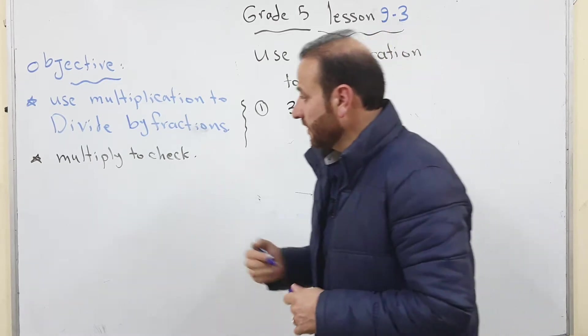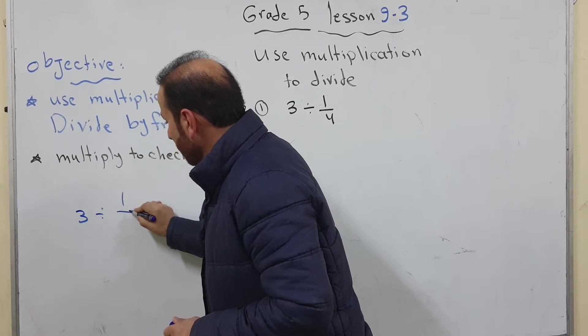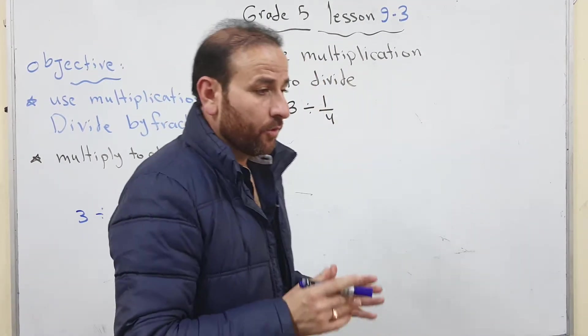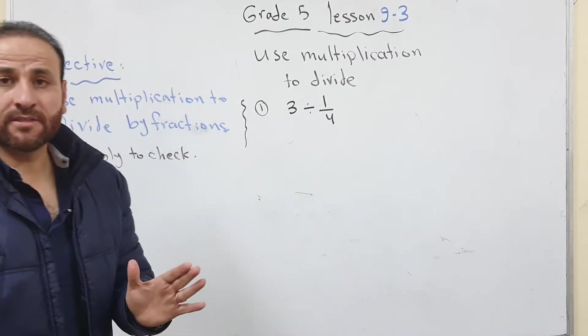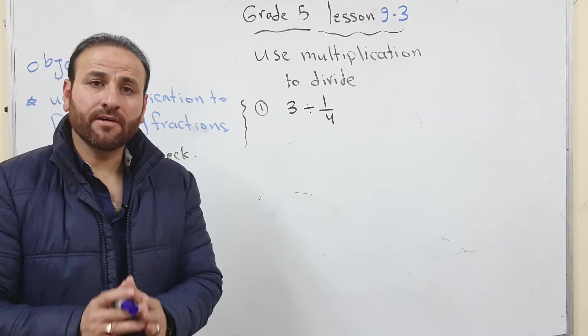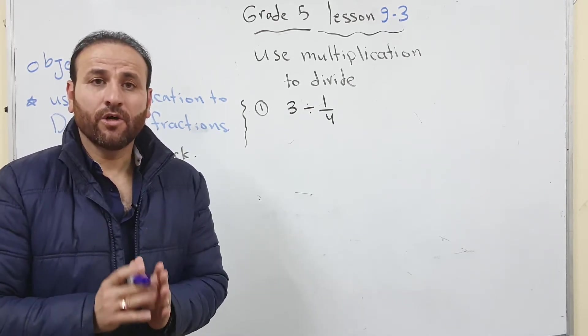If I'm dividing 3 divided by 1 over 2, this is the first example. I want to divide 3 whole numbers by halves. It means how many halves are in 3 wholes.